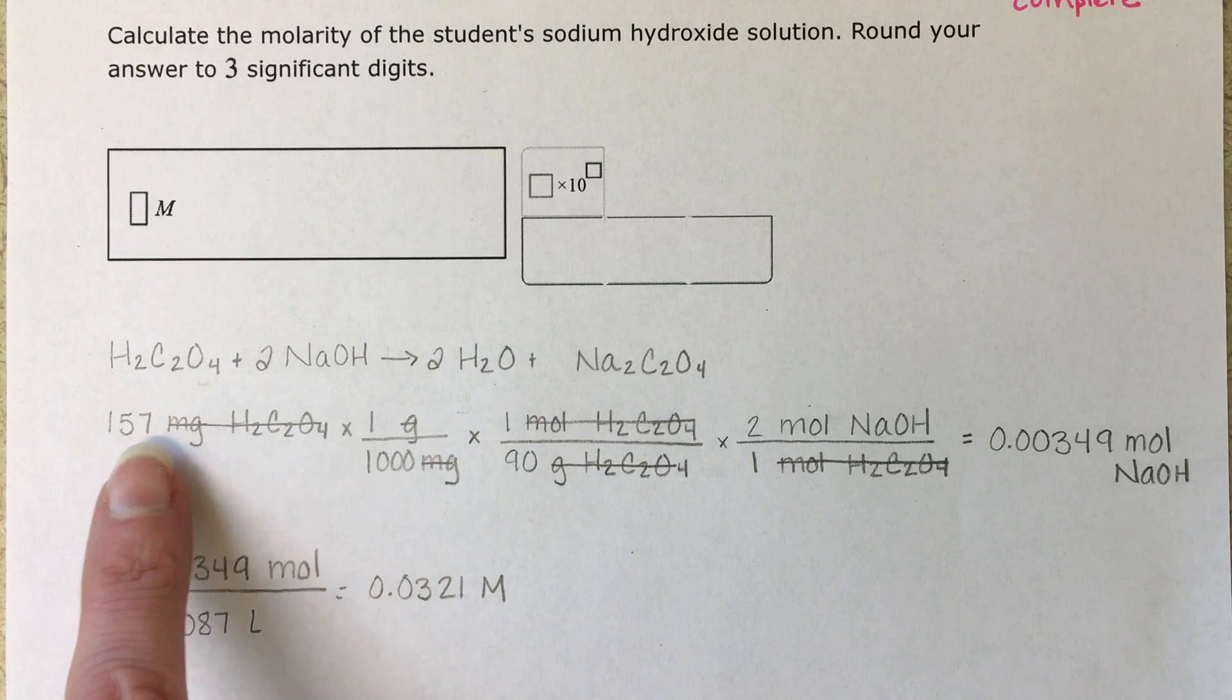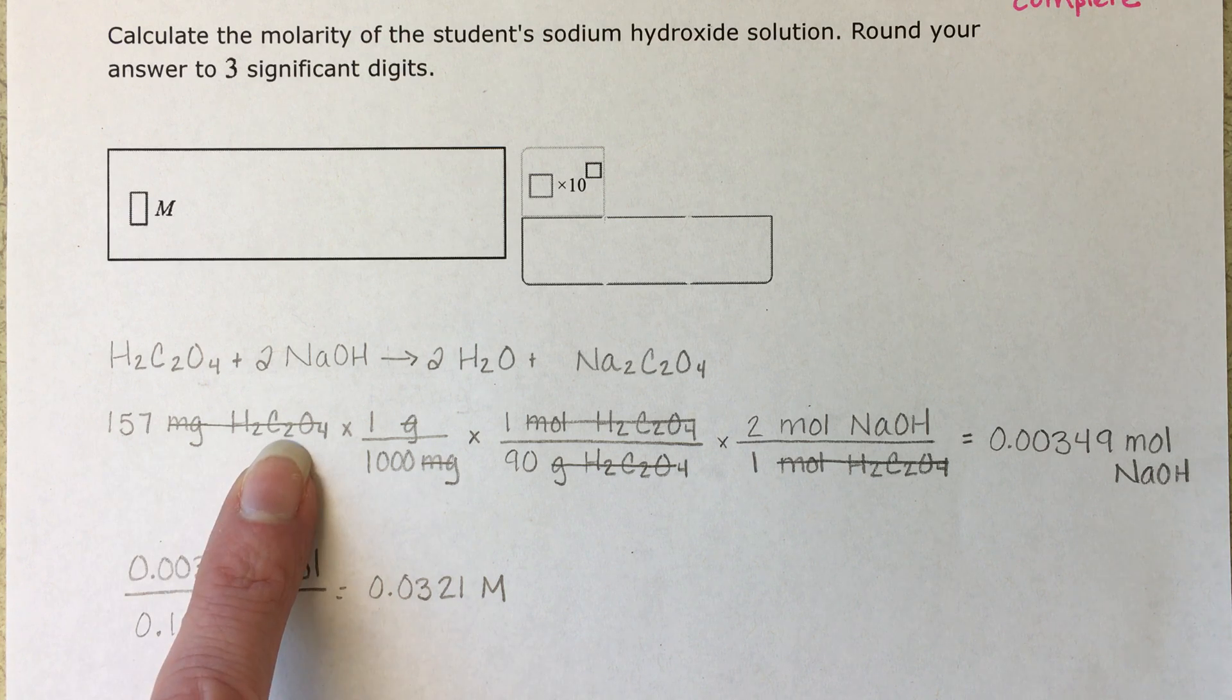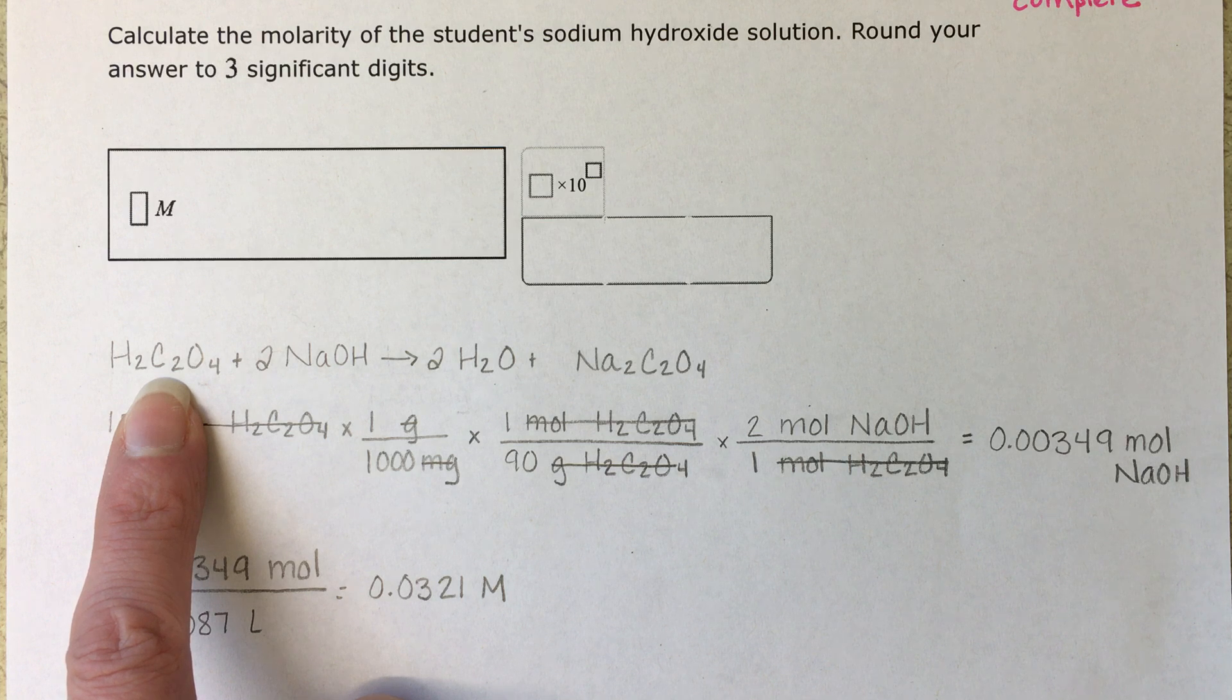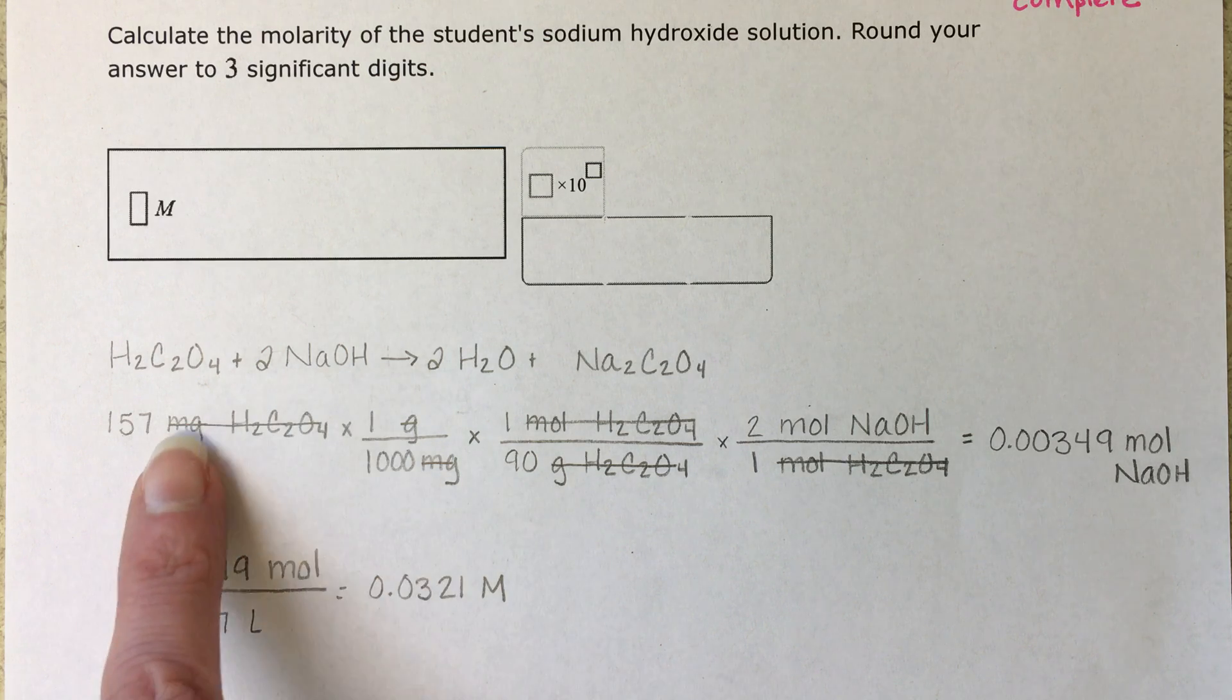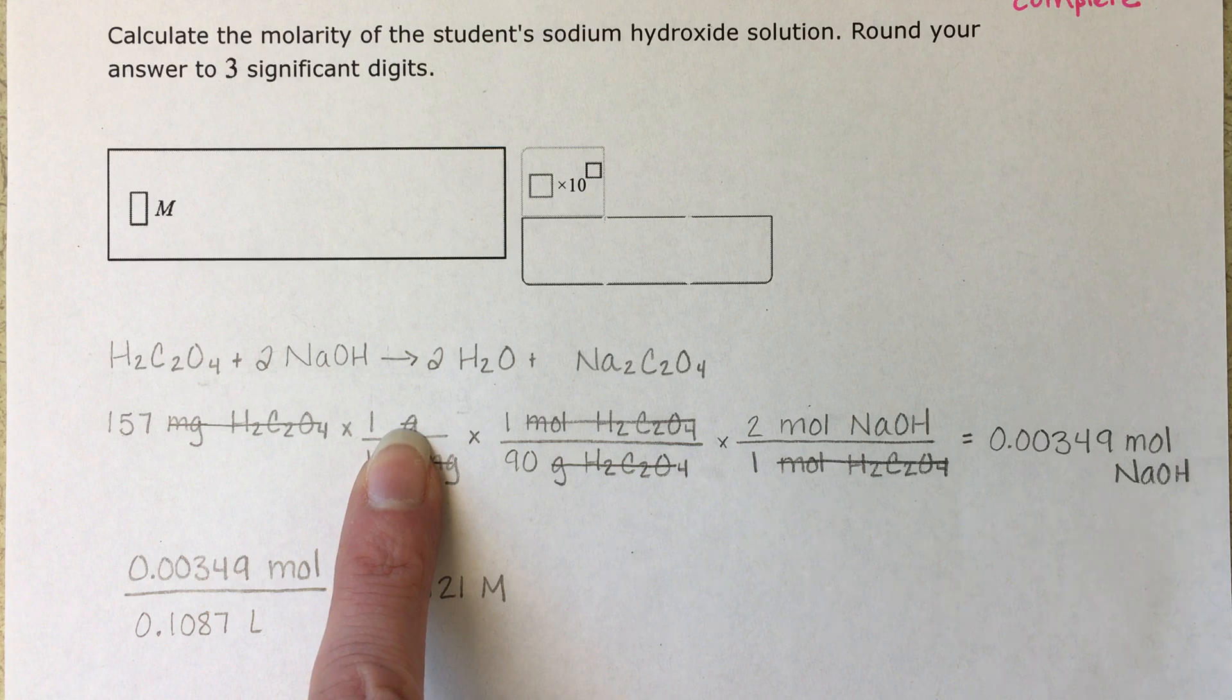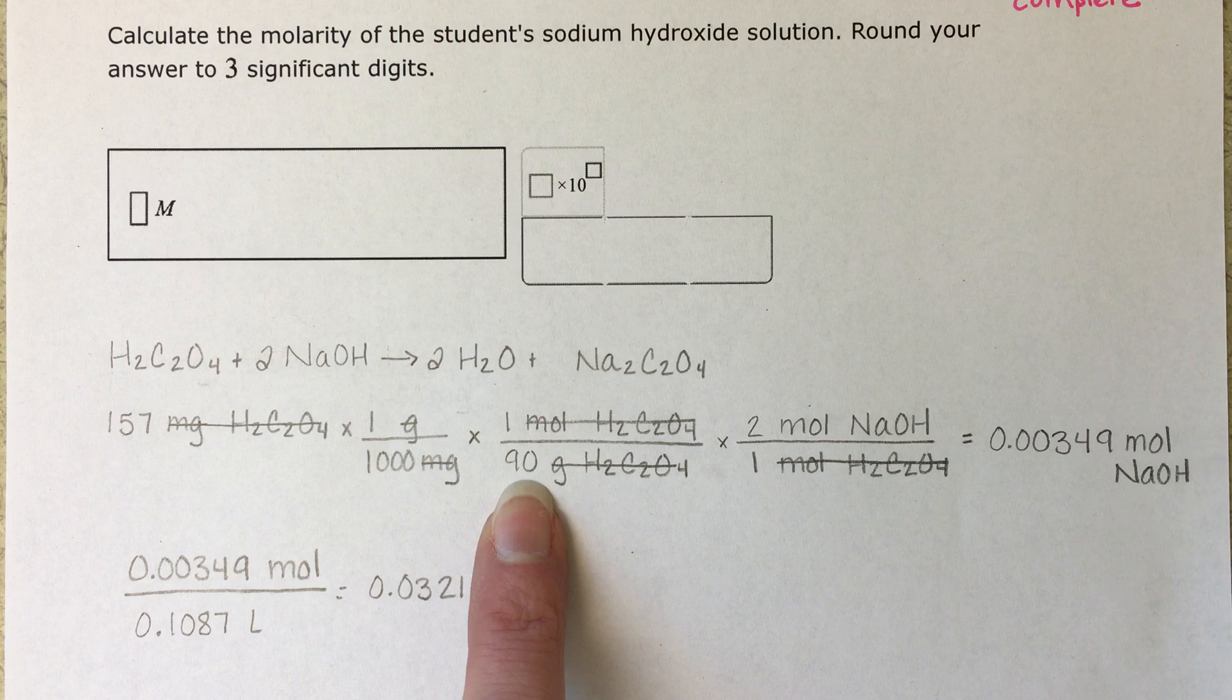We know from the problem that we were starting with 157 milligrams of oxalic acid. We need to figure out how many moles of oxalic acid we have so that we know how many moles of sodium hydroxide were required for the reaction. So right away I'm going to convert milligrams into grams so that I can convert grams into moles using the molecular weight of oxalic acid, which is 90 grams per mole.